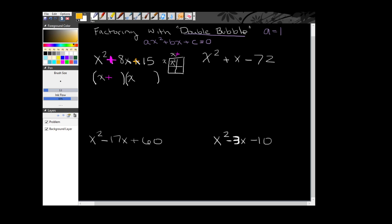Then I look at my second sign. Now this second sign is telling me what my c value is. So I know when I multiply this box together, I'm going to have a positive 15 here.